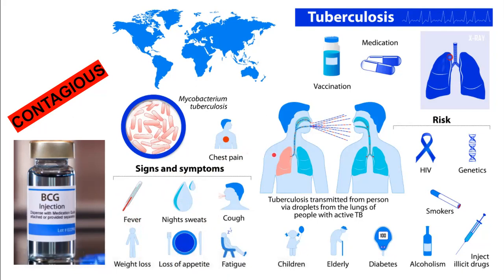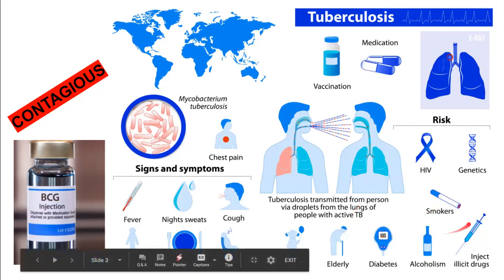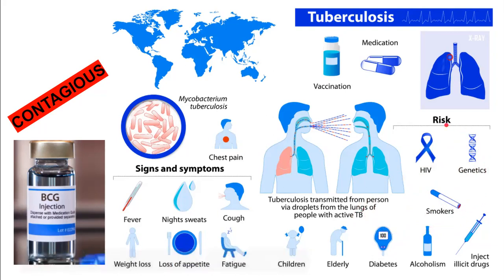Chest pain is also present since it is a disease of the lungs. People at risk include those with HIV, those with poor immune systems, smokers, people who inject illicit drugs, alcoholics, diabetic patients, the elderly, and children especially under five years of age. In summary, anything causing an immunosuppressant effect makes people more prone to TB.